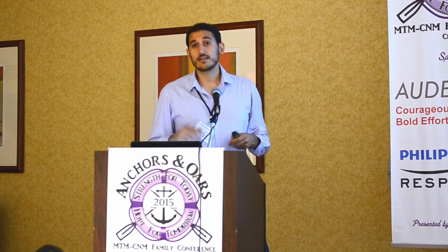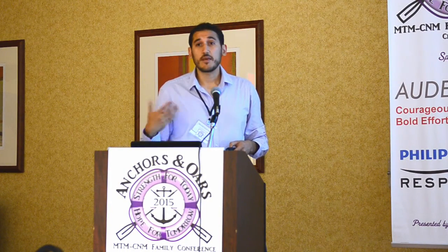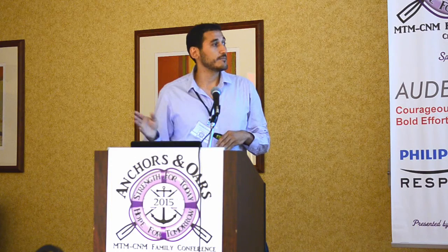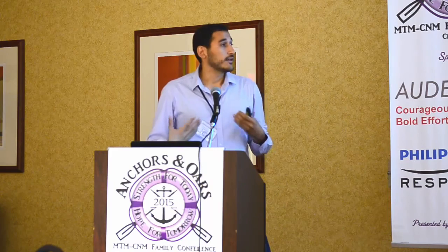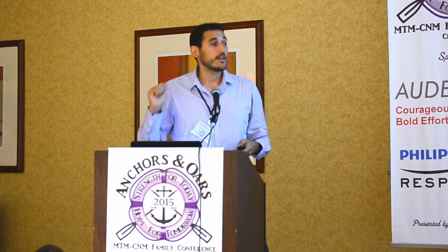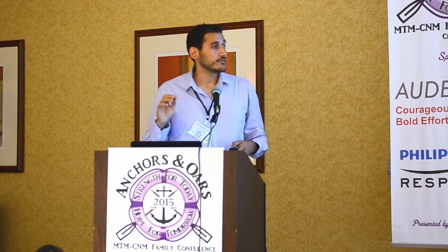How can we actually get this data? There are two basic ways. One is just looking to the past, through reading the medical charts of different patients — we call this retrospective studies. Retrospective studies are quicker and easier to complete, but they are prone to different biases. The best way is to look into the future: follow a patient over a specific amount of time and try to get all the data we can. This gives us precise estimates of incidence, outcomes, and relative risk based on exposure.